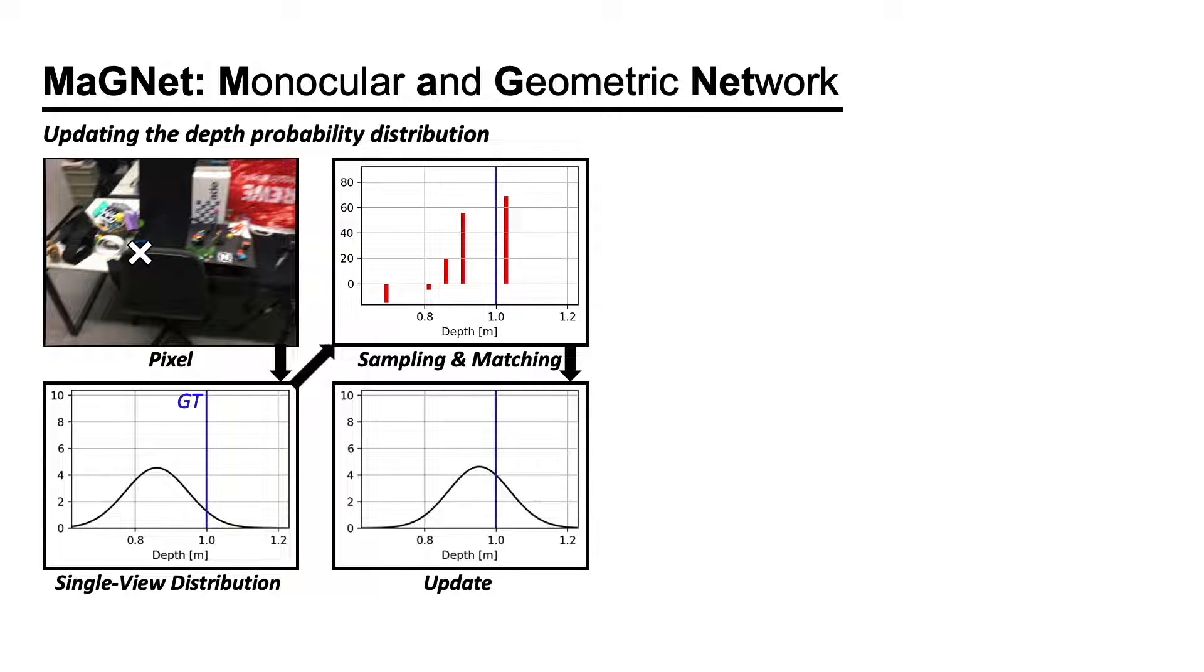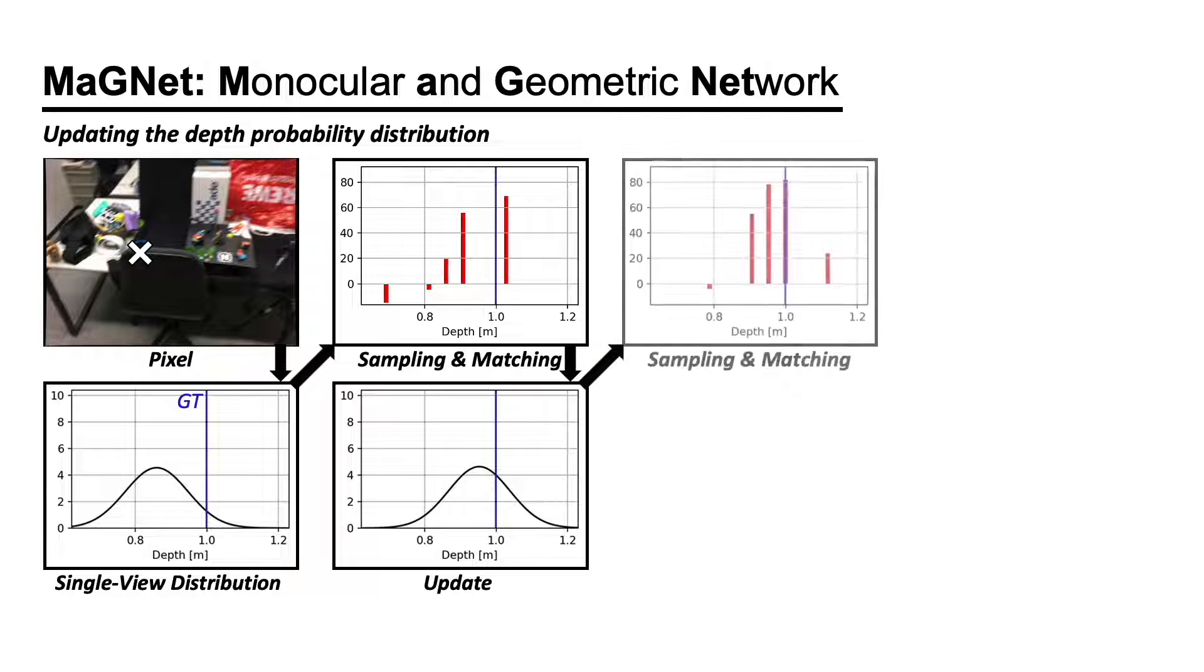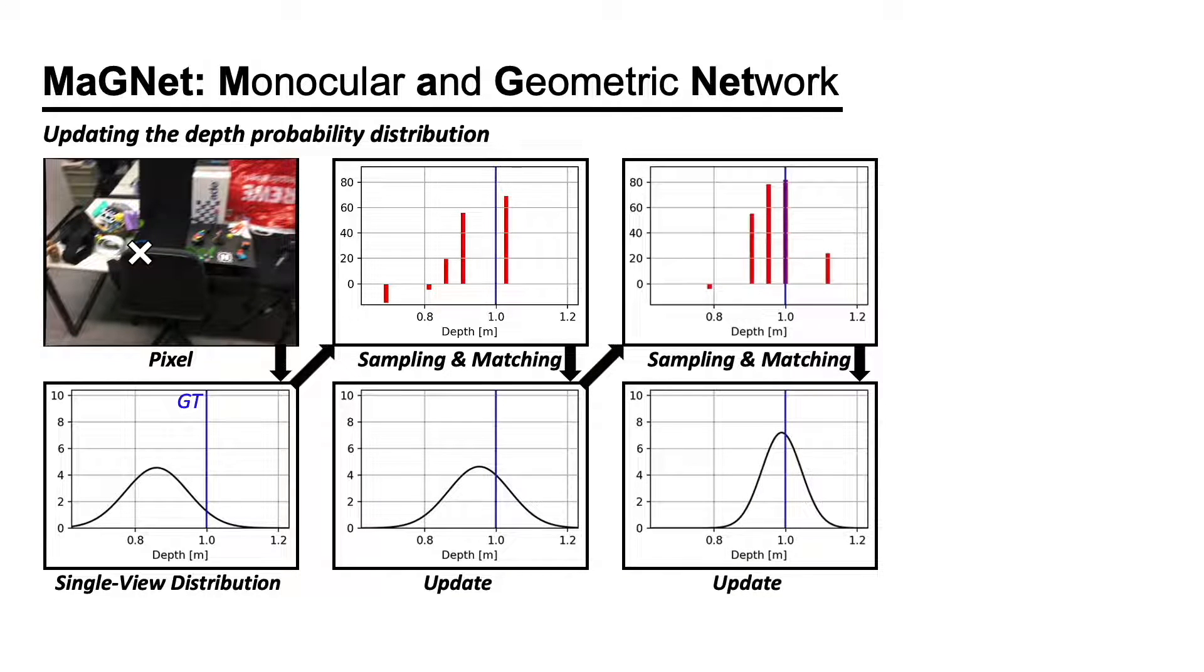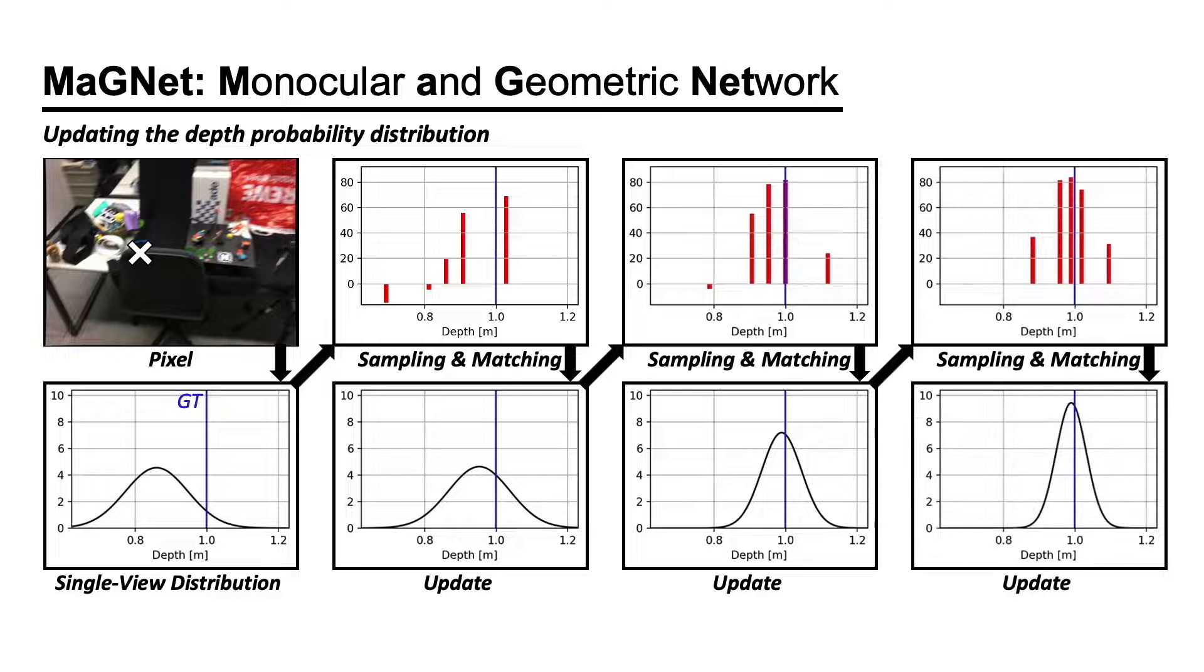This updated distribution now contains the information from both monocular and geometric cues. To obtain higher accuracy, we can repeat this process by sampling another set of depth candidates from the updated distribution. As we repeat this process, the distribution becomes more accurate and more certain about its prediction.